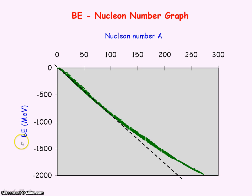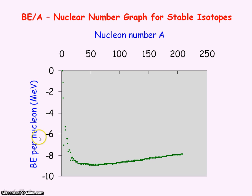This graph shows the binding energy in MeV against the nucleon number. At the beginning it is directly proportional, and then less binding energy is needed per additional nucleon. A second graph shows the binding energy per nucleon against the nucleon number. The binding energy per nucleon is the total binding energy divided by the nucleon number. It represents the binding energy released to add each nucleon to the nucleus, or the average energy needed to separate each nucleon from the nucleus.